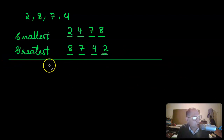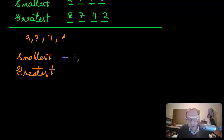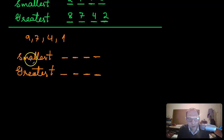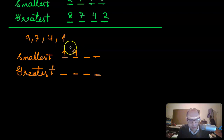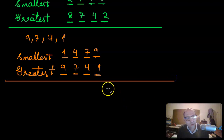Let's do one more. The digits given are nine, seven, four, and one. How do you make the smallest and greatest four-digit numbers using these digits? For the smallest number, make the largest place value as small as possible — so you choose one, then four, then seven, then nine. The smallest number would be one thousand four hundred seventy-nine.